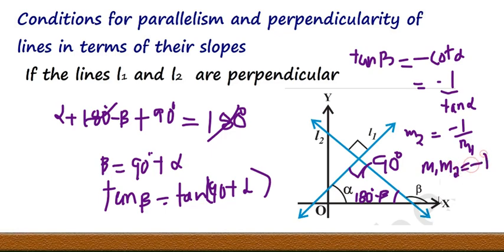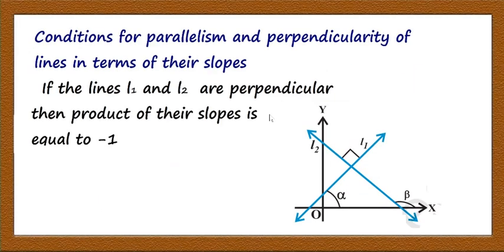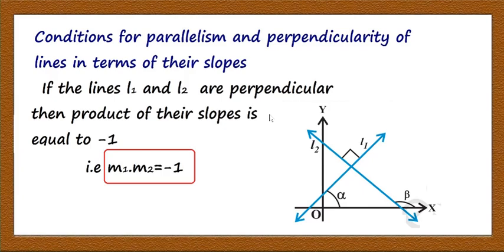Remember this result: if the lines are perpendicular, then the product of their slopes is equal to -1. That is, m1 × m2 = -1. Conversely, if m1 × m2 = -1, then the lines are perpendicular to each other.